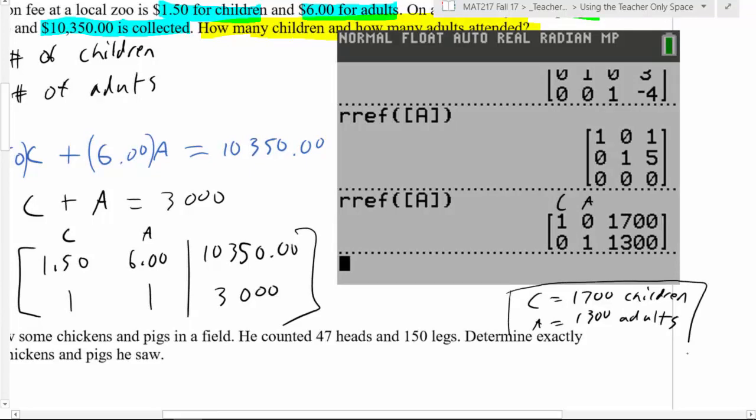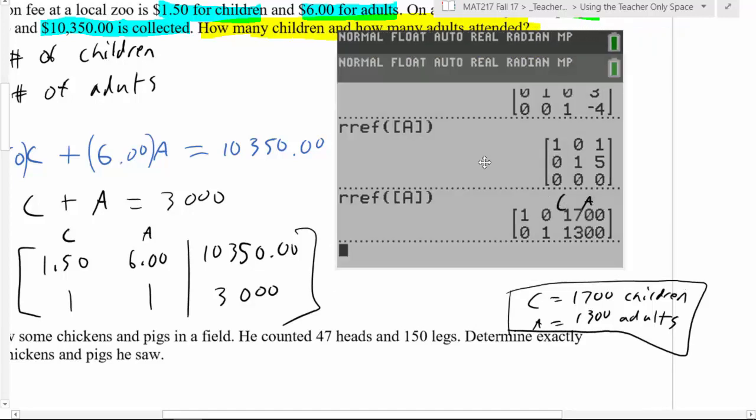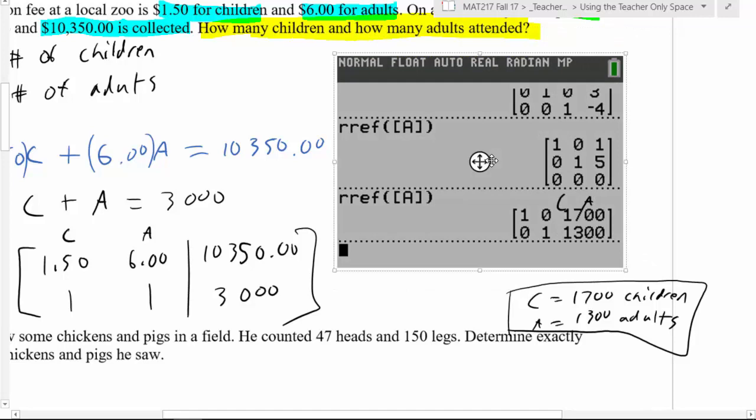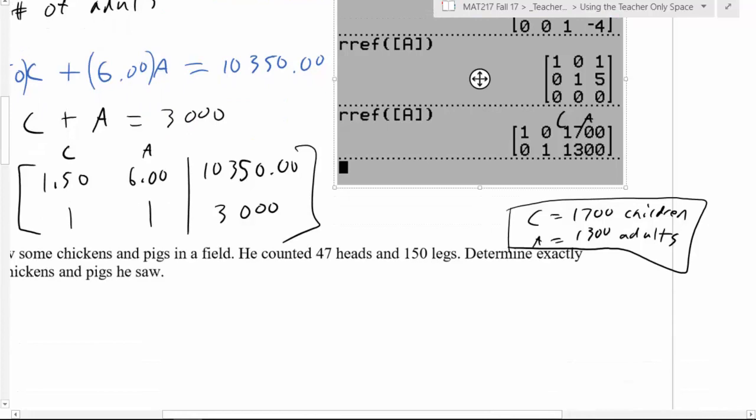So last but not least, I always recommend when you finish a problem, always go back and read and make sure you answer the question that was being asked. So they're saying, how many children and adults attended? 1,700 children, 1,300 adults, perfect. If they had asked for something else, like money or revenue or whatever, then you have to go back and just relook, but that one worked out fine.